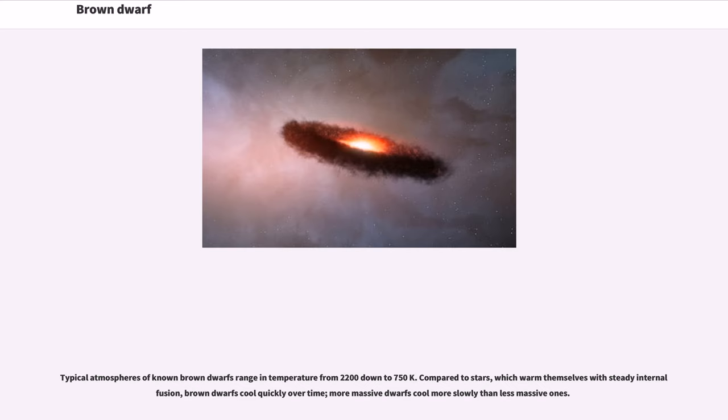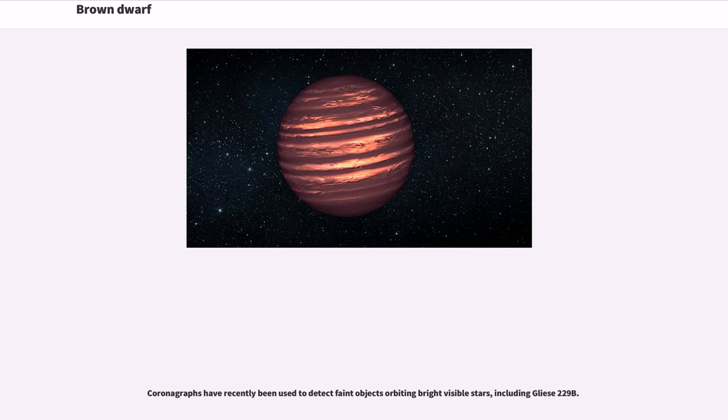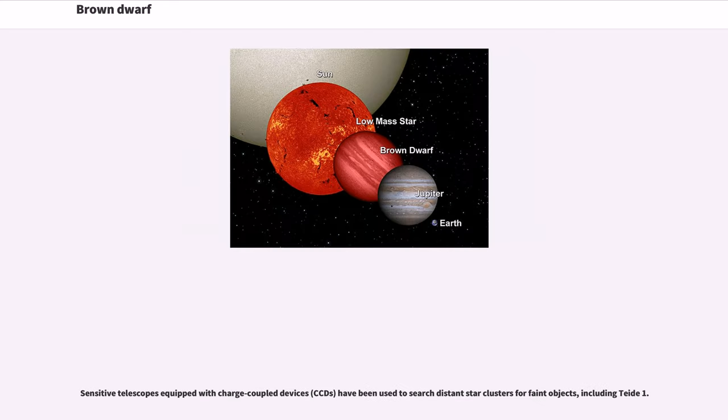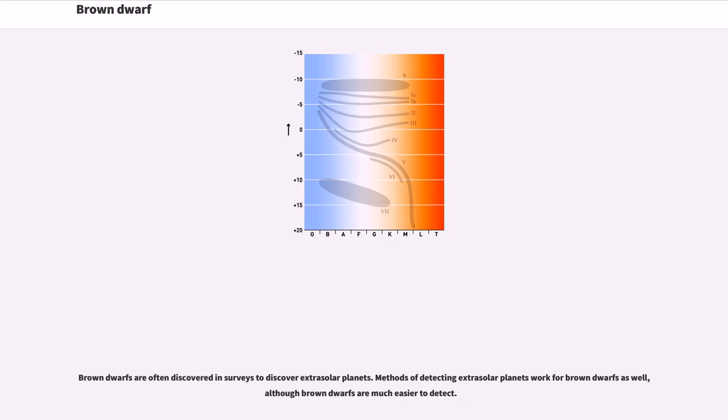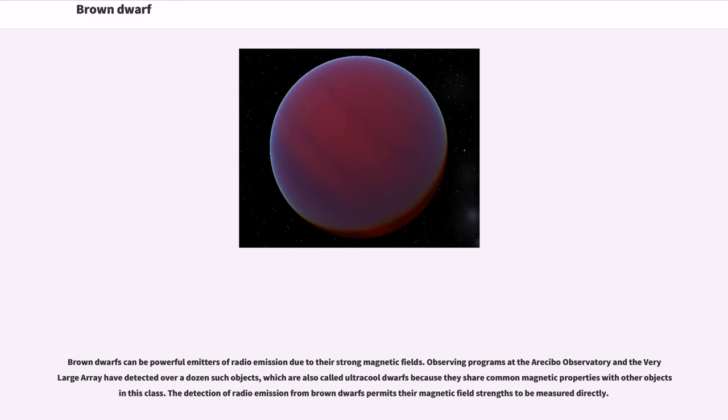Coronagraphs have recently been used to detect faint objects orbiting bright visible stars, including Gliese 229B. Sensitive telescopes equipped with charge-coupled devices have been used to search distant star clusters for faint objects, including Teide 1. Wide field searches have identified individual faint objects. Brown dwarfs are often discovered in surveys to discover extrasolar planets. Methods of detecting extrasolar planets work for brown dwarfs as well, although brown dwarfs are much easier to detect. Brown dwarfs can be powerful emitters of radio emission due to their strong magnetic fields. Observing programs have detected over a dozen such objects, which are also called ultra-cool dwarfs. The detection of radio emission from brown dwarfs permits their magnetic field strengths to be measured directly.